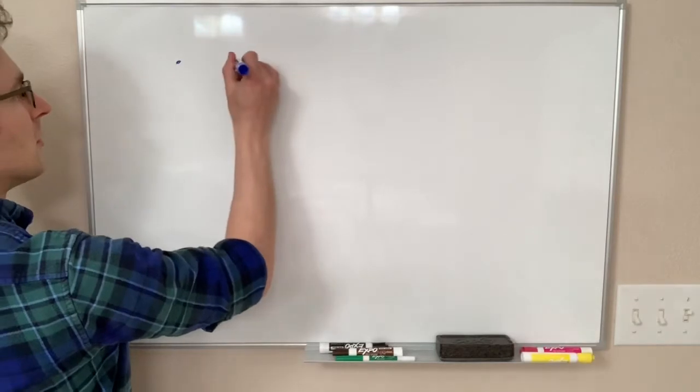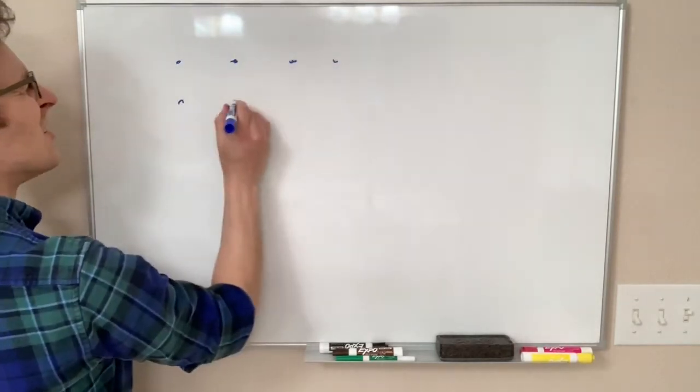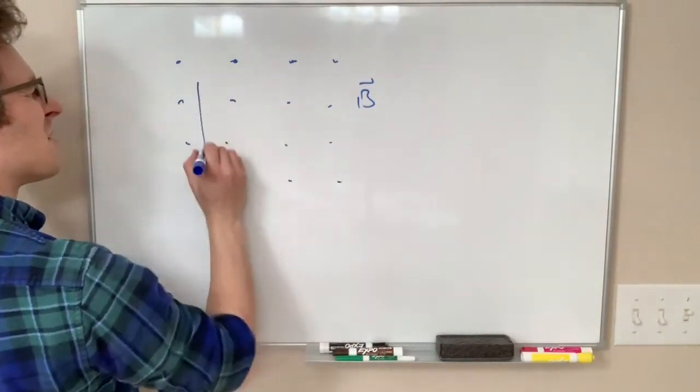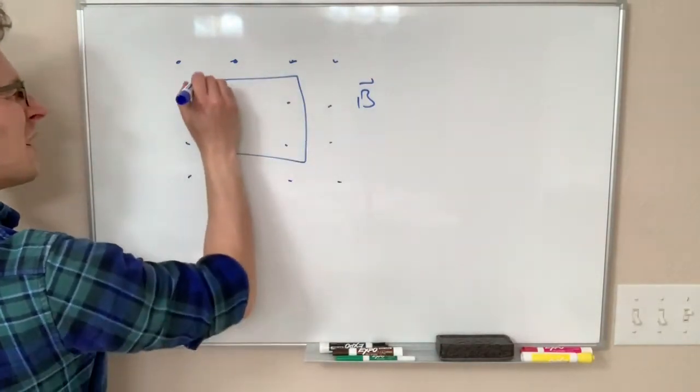So that picture looked kind of like this. So we have some magnetic field in this case, we'll say it's out of the board, and we have some loop in the magnetic field.